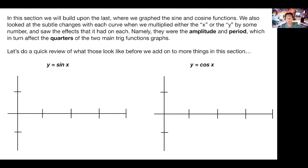We're just gonna build upon the last section, which was dealing with sine and cosine in general, then going from there to talk about their amplitude and periods — cutting those into four quarters of our unit circle. We were able to hopefully get the hang of how quickly we can graph these based off the unit circle. So I'm gonna do a quick drawing here of a unit circle so that we can all see it and make sure we realize why these are what they are.